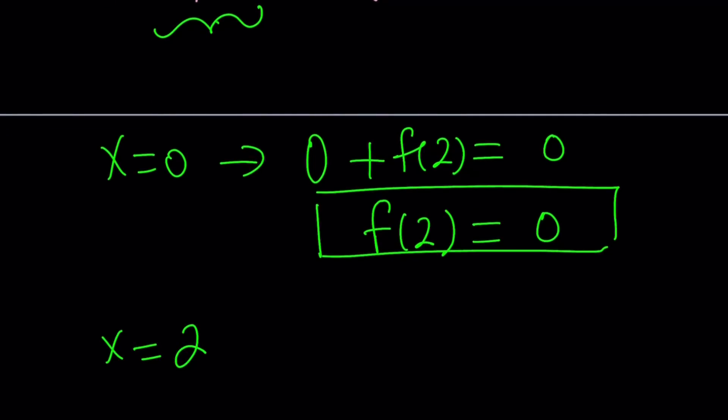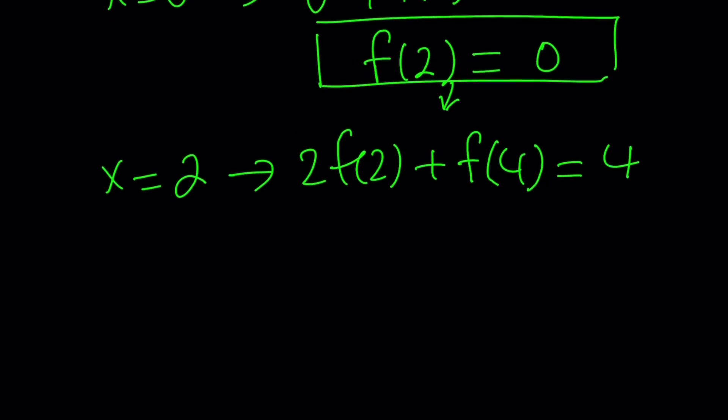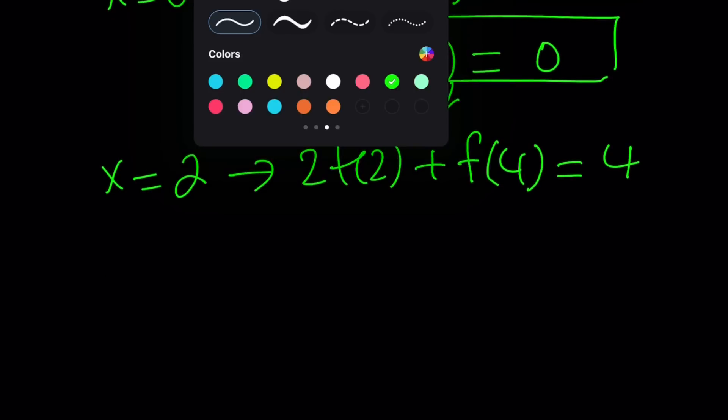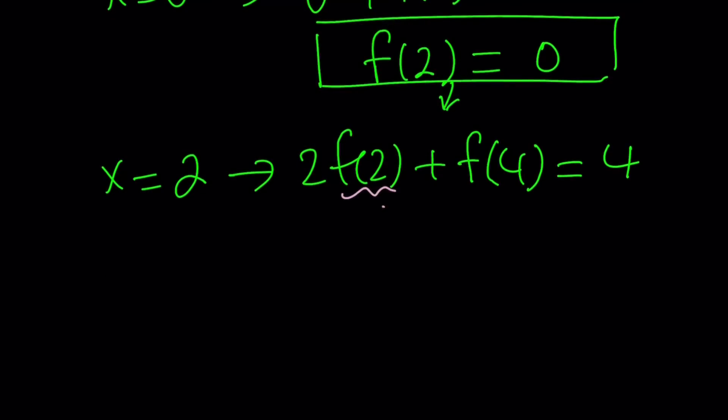If I replace x with 2, then I get 2 times f of 2 plus f of 2 plus 2, which is 4, equals 2 squared, which is 4. Now I do know from the previous equation that f of 2 is equal to 0. So now is a good time to replace f of 2 with 0. Is that always going to be 0? No. You'll see. It's not always going to be like that. But that part is 0. That leaves me with f of 4 equals 4.